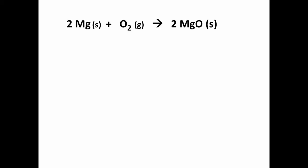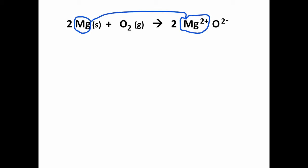This is an ionic compound and we can explicitly show the charges of the magnesium and oxide ions in this compound. When we do that it's reasonably easy to see that the magnesium loses electrons to make Mg²⁺, the oxygen gains electrons to make O²⁻, and this is a redox reaction — oxidation and reduction.